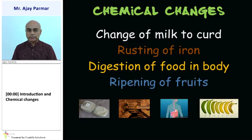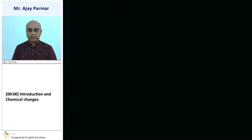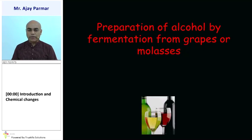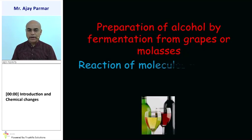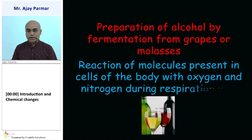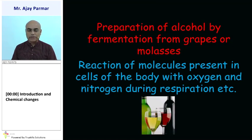Ripening of fruits is also a chemical change. Preparation of alcohol by fermentation from grapes or from molasses is also a chemical change. And the reactions of molecules present in the cell during cellular respiration — whatever conversions take place involving oxygen and nitrogen — that is also a chemical change.